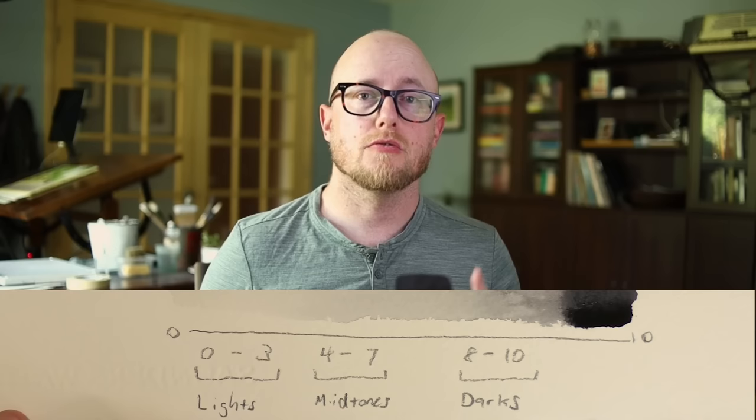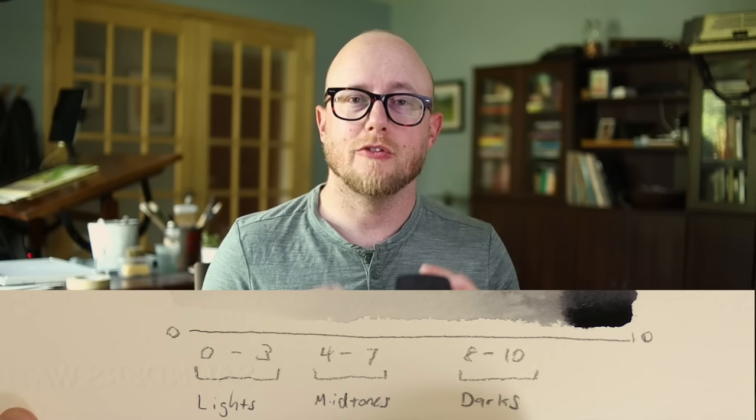Once we establish that, we split this into three different groups. Of that zero through ten, you have zero through three — those are your light values. Then you have four through seven — those are your middle values. And then you have eight through ten — those are your dark values. When you combine all of these values, you get the full range of the scene that you're looking at.